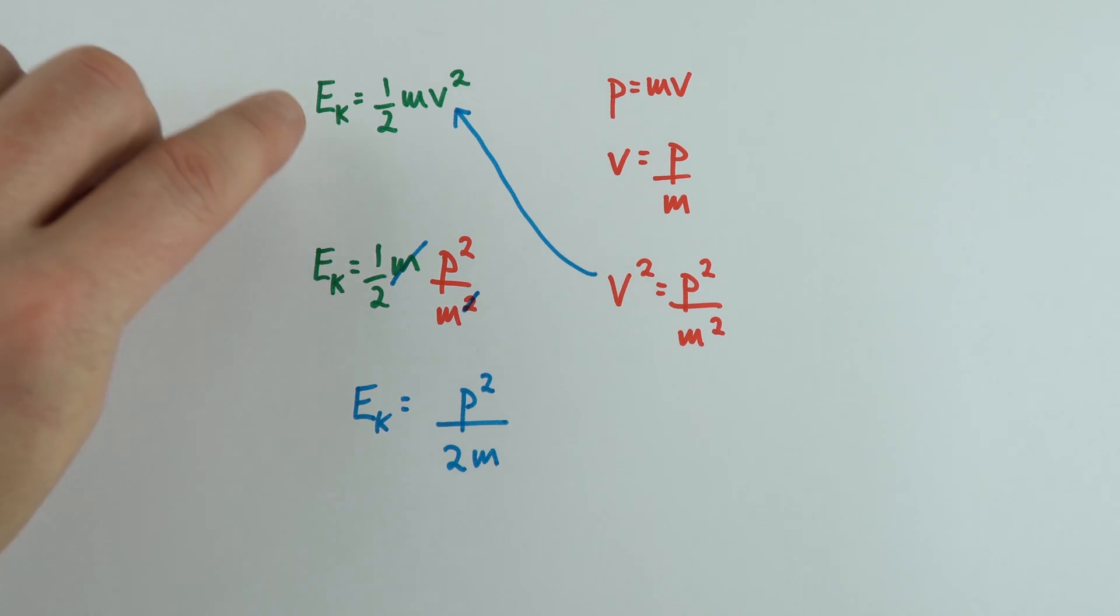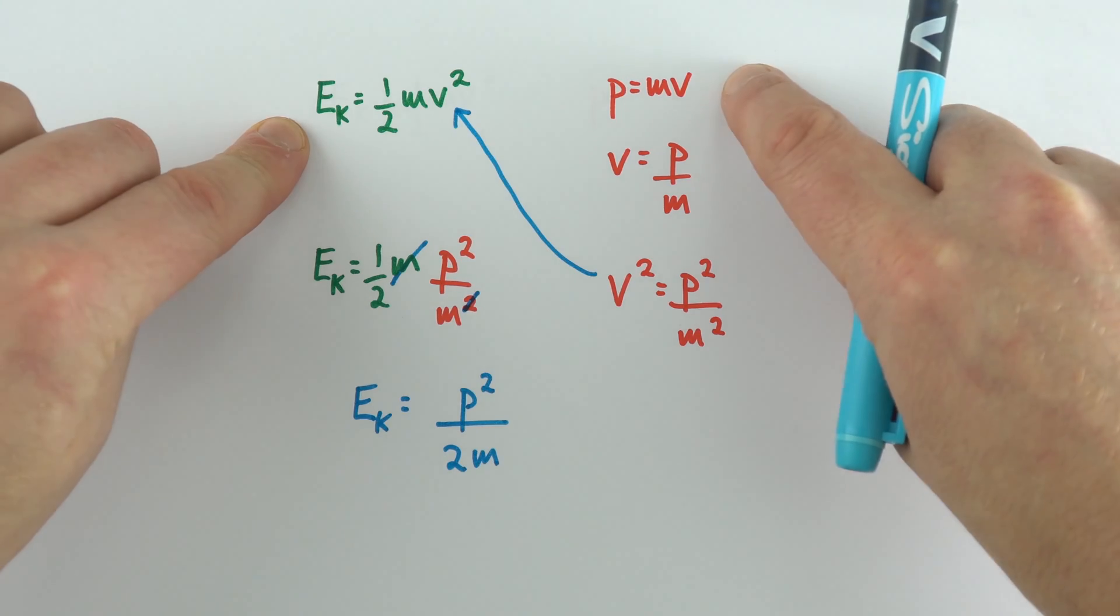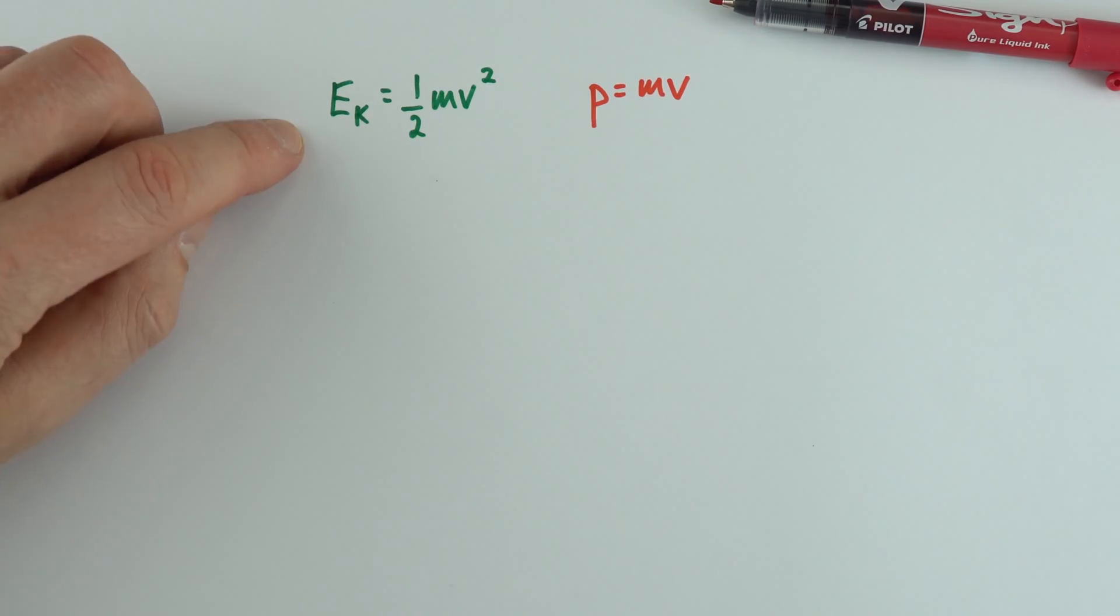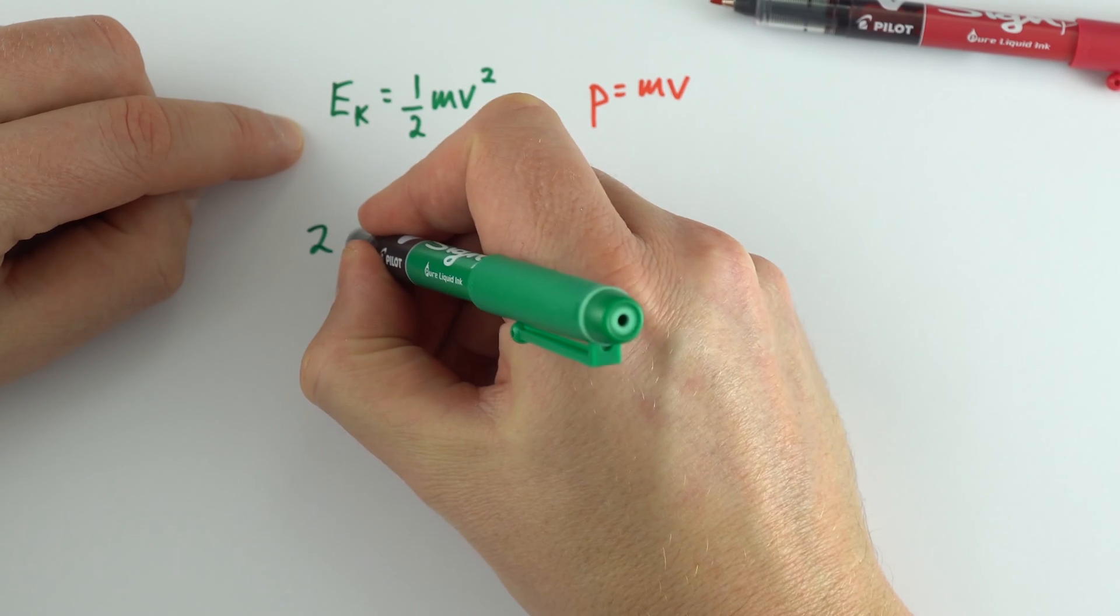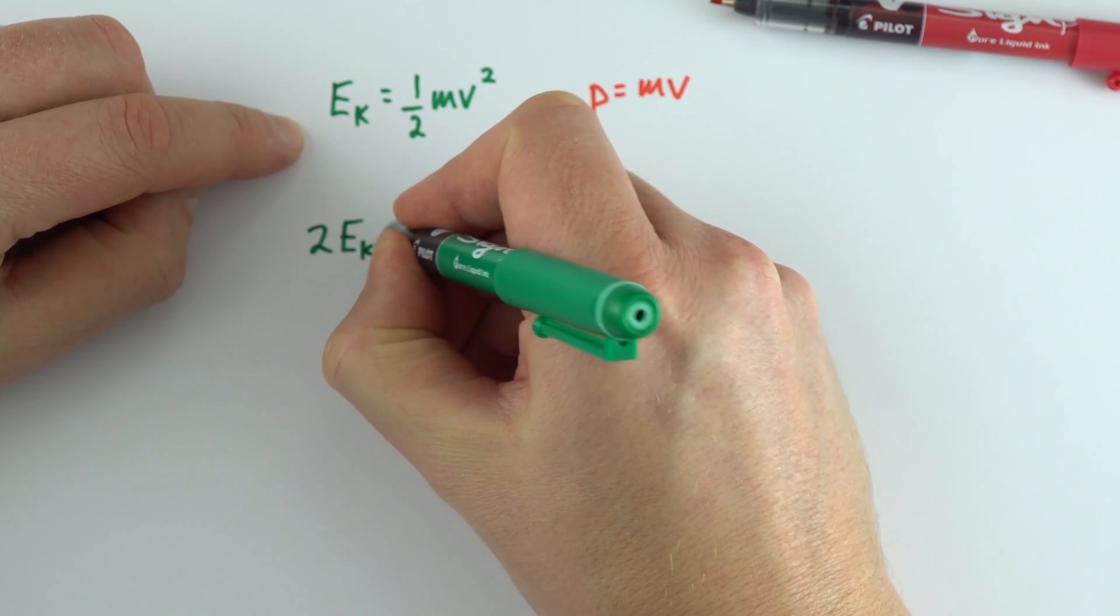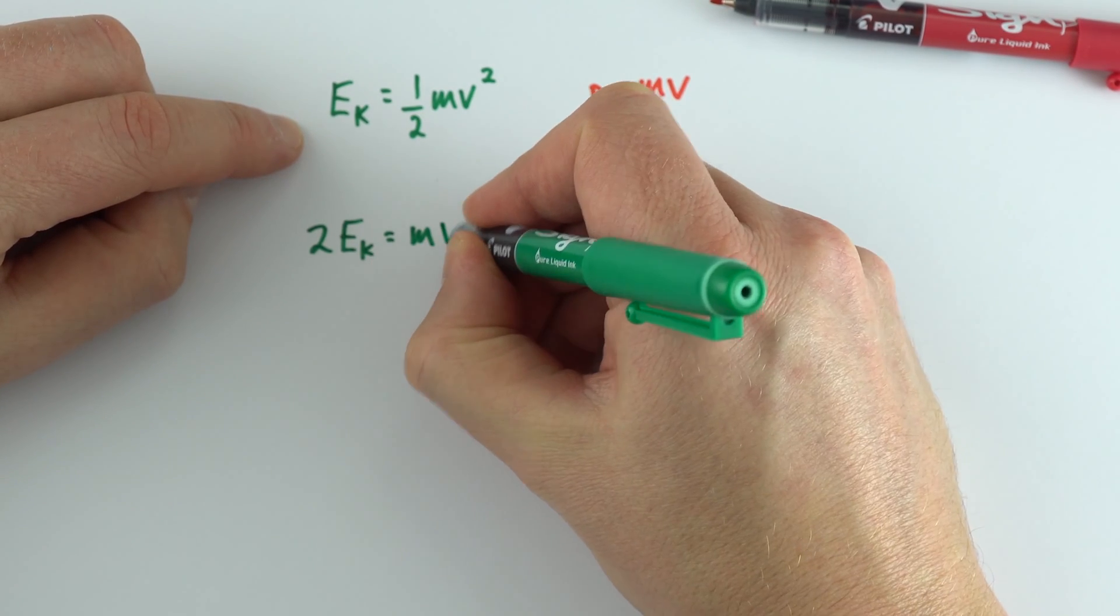Again, we're going to start with the equations for kinetic energy and momentum. But this time I'm going to start with this equation and multiply both sides by 2 to say that 2Ek = mv².